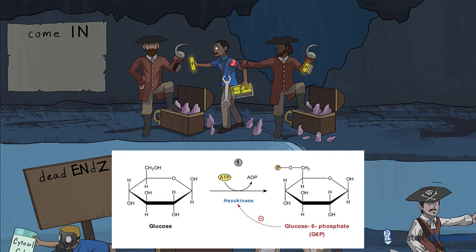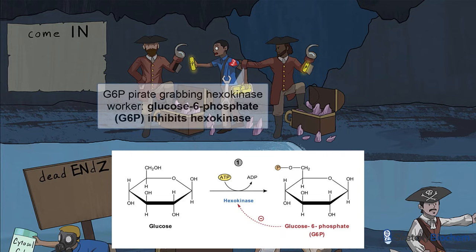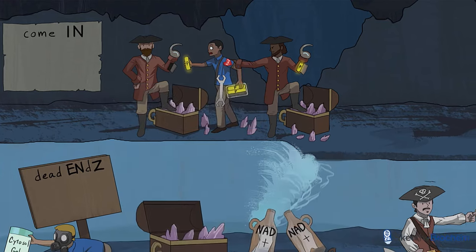G6P binding to hexokinase is like changing your apartment locks to get away from your crazy ex-boyfriend — a pretty effective inhibitor. Or in the case of our pirate friends, assaulting the worker is a pretty effective way to stop him from adding phosphate batteries to any more glucose pirate robots.